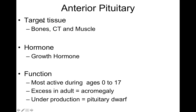Moving on to the anterior pituitary hormones: growth hormone targets bone, connective tissue, and muscle, causing those tissues to mature and get bigger. It's most active from before birth to around age 17, though this varies — for some people it's more active until 13 or 14, for others all the way until 20.